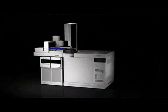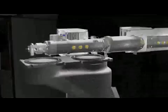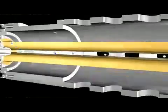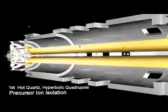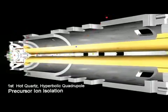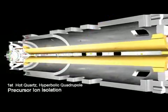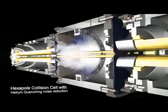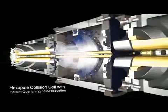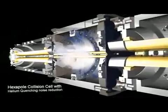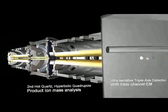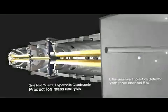The typical MS/MS description focuses on the extraction of ions from the source, isolation of the precursor ion in the first quadrupole, dissociation of the precursor ion in the collision cell, and mass filtering of the product ions in the second quadrupole before detection.